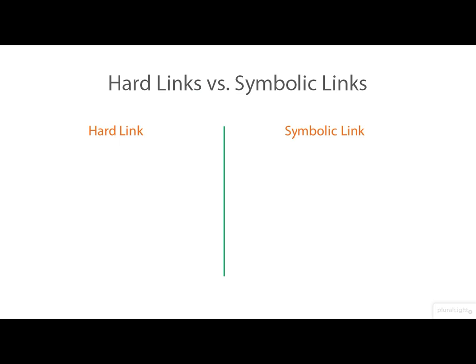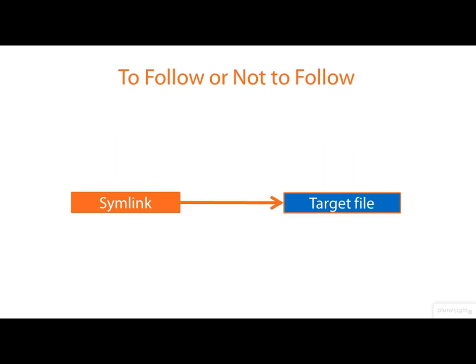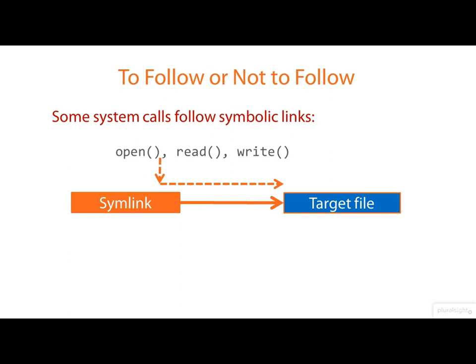The differences between hard links and symbolic links are important. The key difference is that a hard link associates a name with an inode number, whereas a symbolic link associates a name with another name. Some system calls follow symbolic links — for example, if you open a file that's a symbolic link, it will follow the link, open the target file, and return a file descriptor on that file, so subsequent reads and writes refer to the target file.